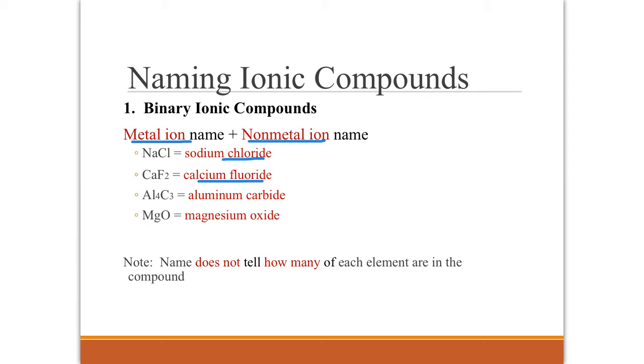Al4C3 becomes aluminum carbide, so carbon turns into carbide. And MgO becomes magnesium oxide. The name of the binary ionic compounds, it doesn't give you any idea about how many of each element is in the compound. Sodium chloride, which only has one sodium and one chloride, the name sounds exactly the same as aluminum carbide, which has four aluminum atoms and three carbon atoms.